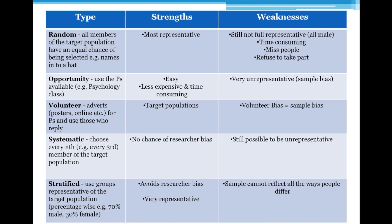Then there's systematic sampling. This is where you choose every nth person — every fourth, fifth, sixth, or seventh person from a list. Like random sampling, you'd need a list of all members of your target population, but it's a different way of selecting them. With random, you're randomly selecting them, whereas with systematic you're using a method: every nth person.